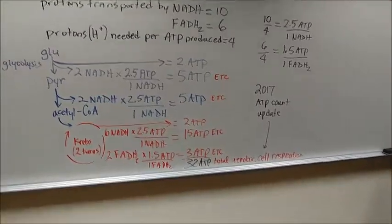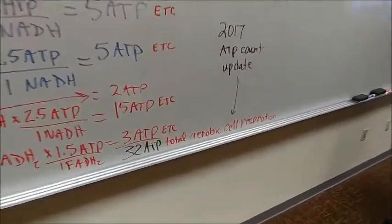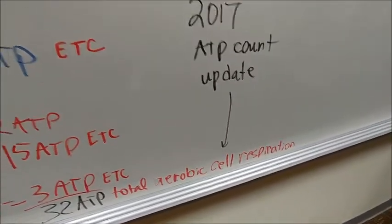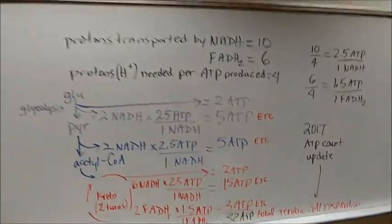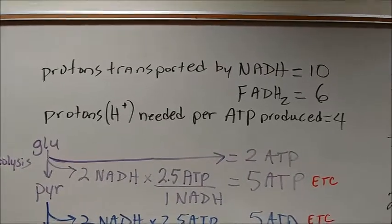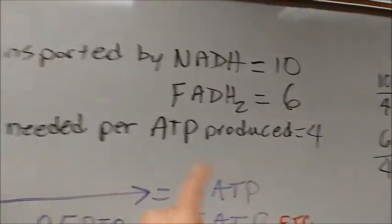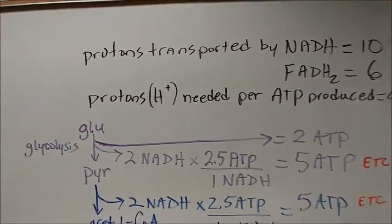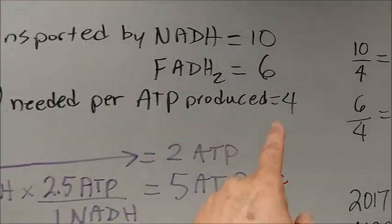Let's do an update on the ATP count in 2017 for total aerobic cell respiration. This is some information I picked up from a textbook I read recently. I have learned that the protons transported by NADH are 10 and FADH2 is 6, and that the protons needed per ATP produced is 4.